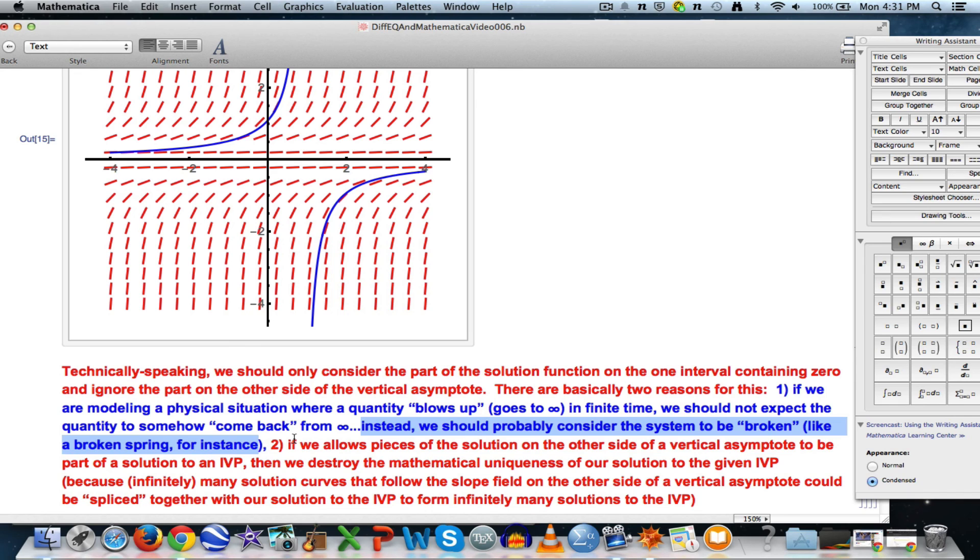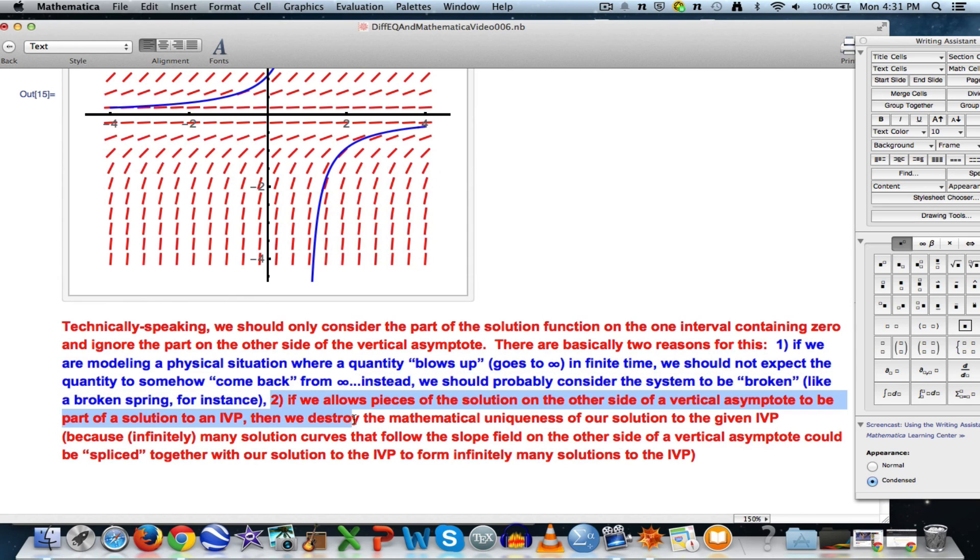Alright, that's one reason we should sort of ignore the part that's after the vertical asymptote. A second reason is more mathematical. If we allow pieces of the solution like this over here on the other side of the vertical asymptote to be part of the solution to the IVP, then you destroy what's called mathematical uniqueness of our solution because basically you could pick any curve over here that follows the slope field to be part of your solution to the original initial value problem.